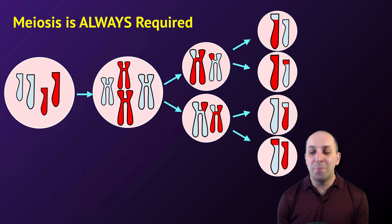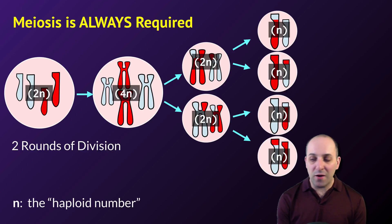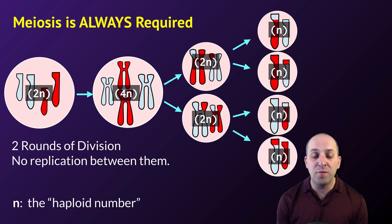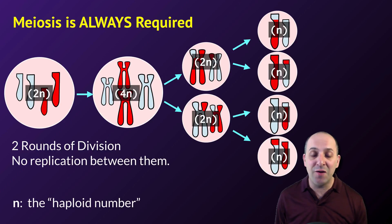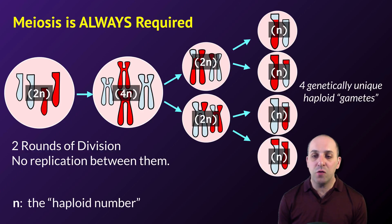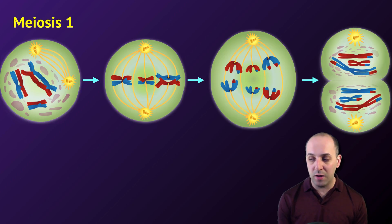Regardless of the specifics of the sexual life cycle, meiosis is always required. This diagram shows what happens to the number of chromosomes over the course of meiosis, using our shorthand of n as the haploid number. Meiosis requires two rounds of cell division with no replication of DNA in between them. You see the first round of cell division in the first two sets of arrows here, taking us from 2n to a 4n cell to two 2n daughter cells. To go from those two diploid daughter cells to four haploid gametes requires another round of cell division, but the DNA is not copied before starting that second round. Because there are two rounds of cell division in meiosis, we break them up into meiosis 1 and meiosis 2.